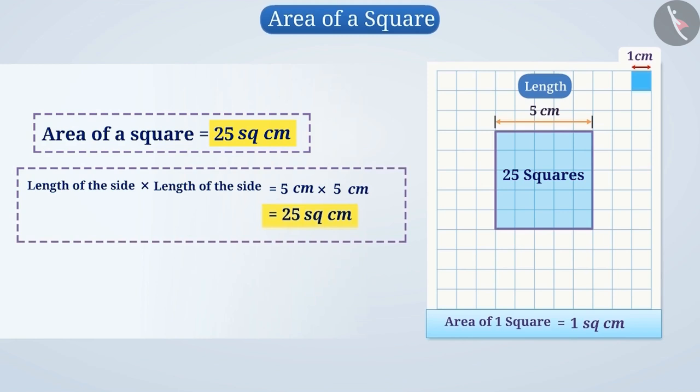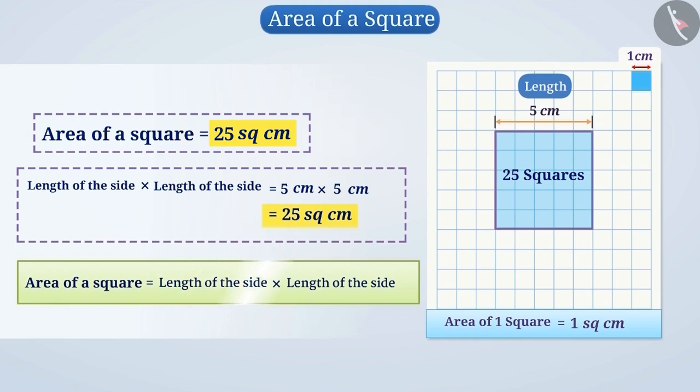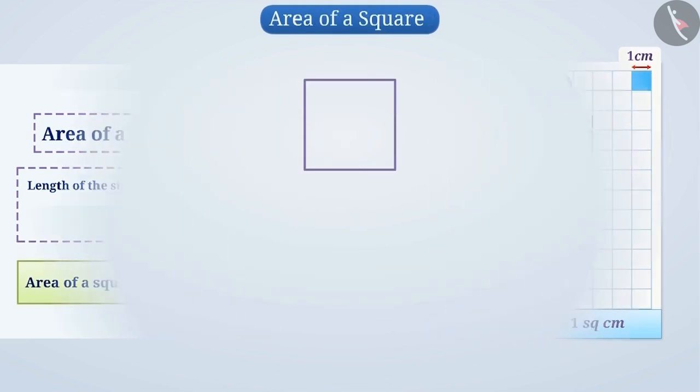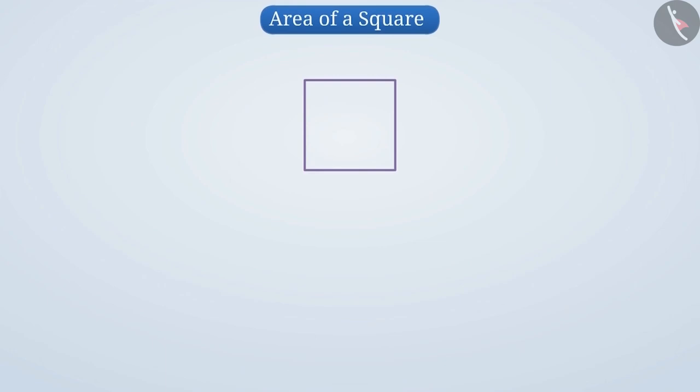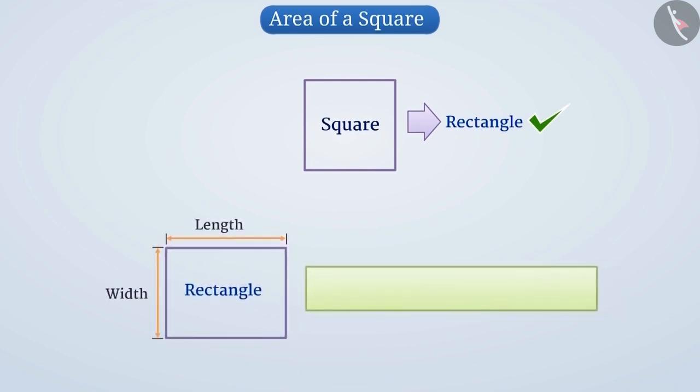In this way, the area of any square is the result of side multiplied by side. We can also conclude this using a different approach. In geometry, we learned that a square is also a rectangle. In the previous video, we learned that the area of a rectangle is length multiplied by width. But in the case of a square, all sides are equal.